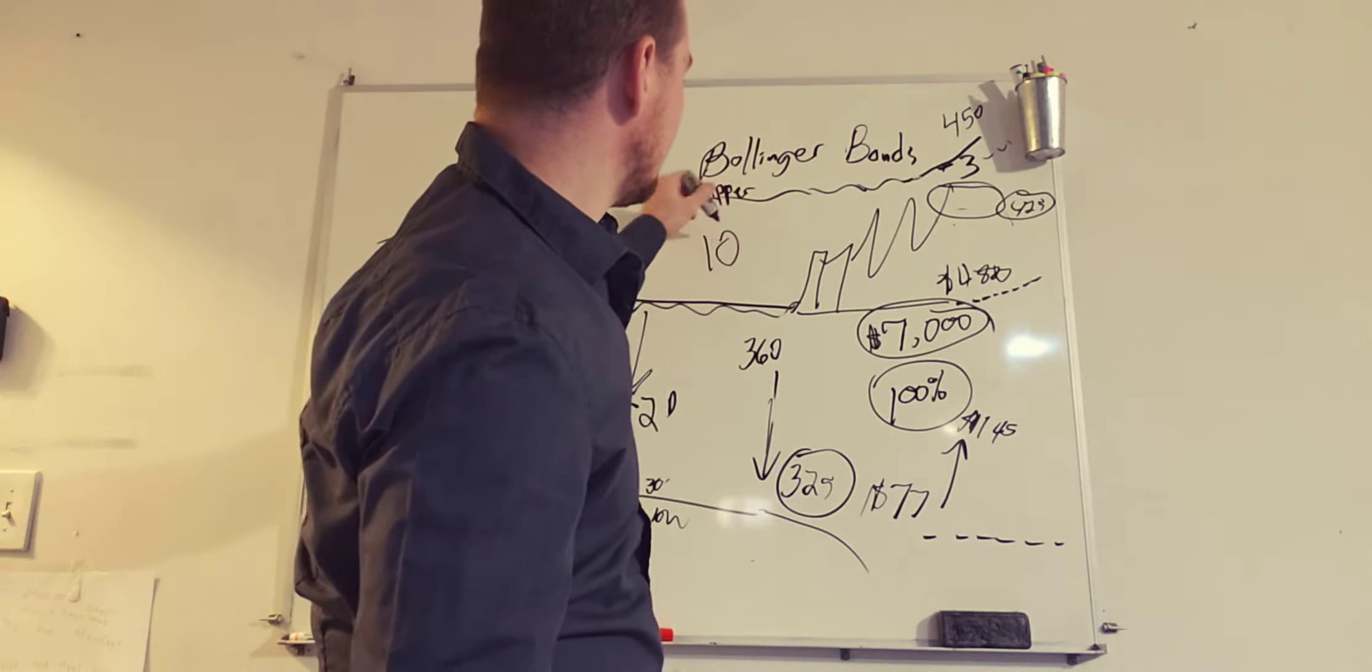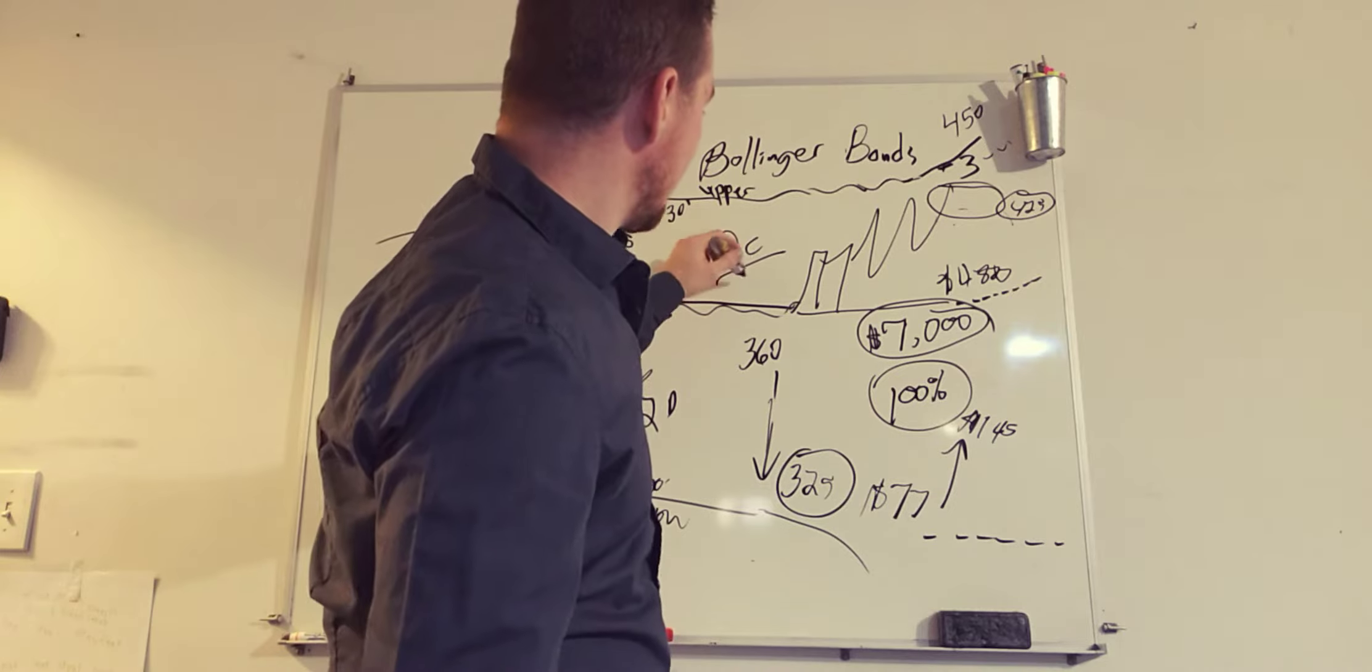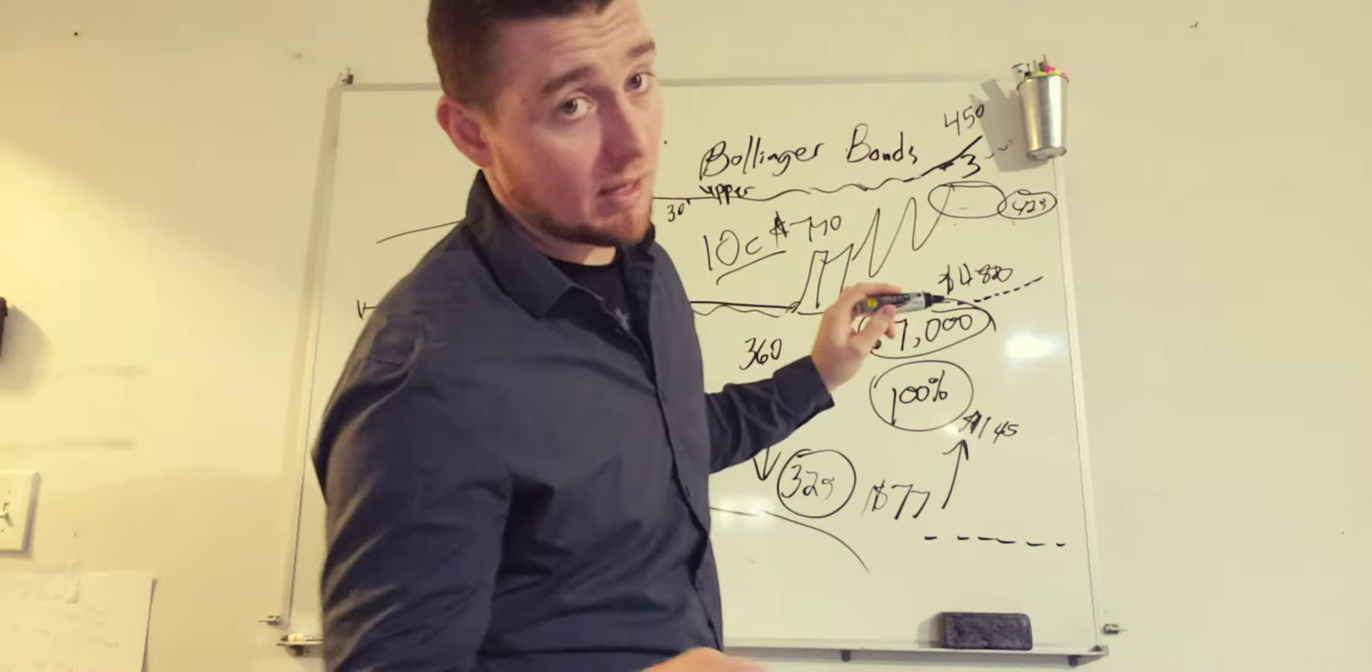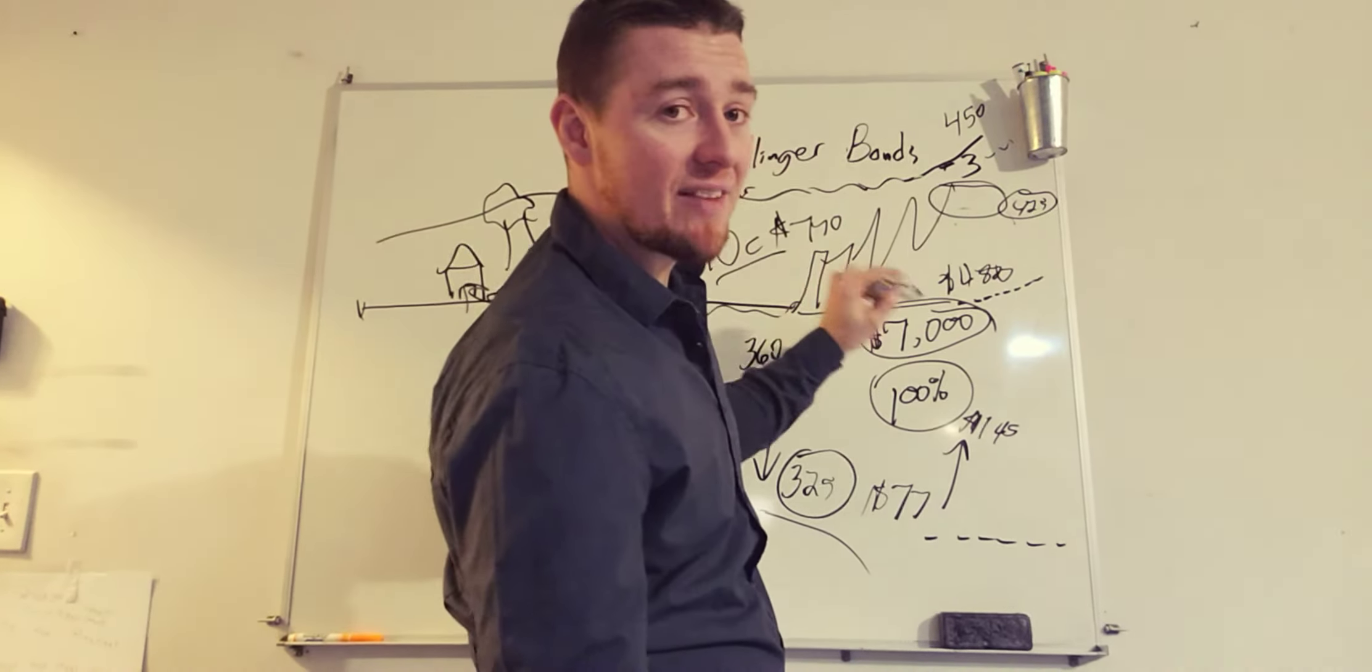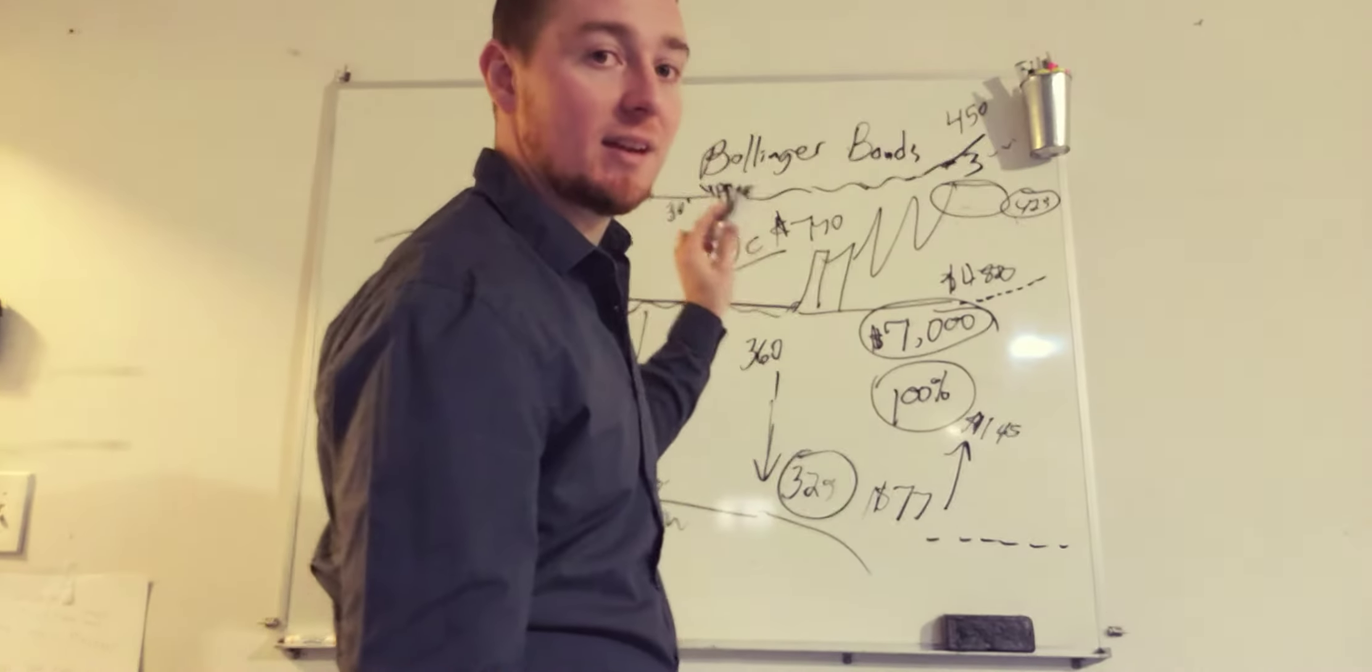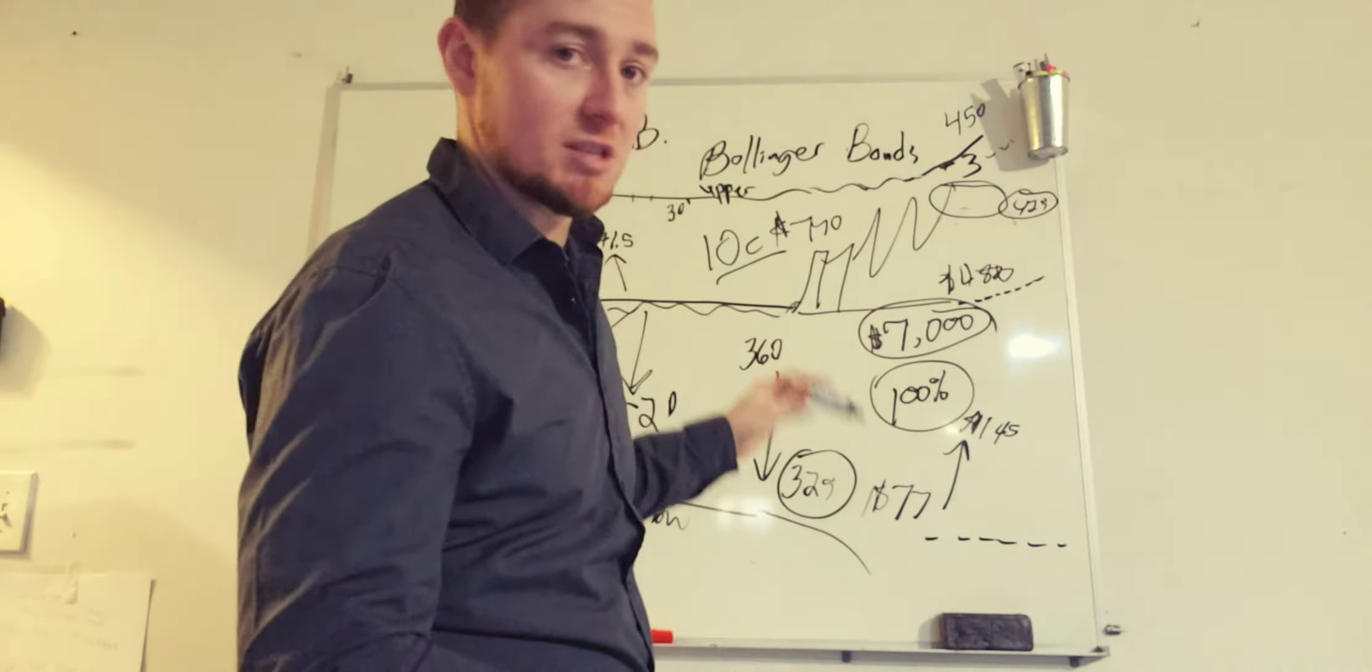10 contracts at $77, that's $770. You walked away, in the event that you held this, with $70,000 on a $770 trade slash investment.